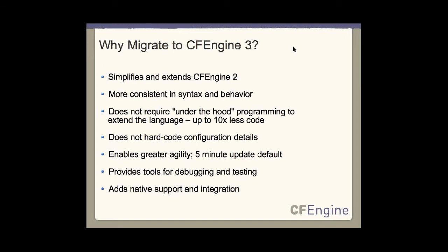So let's explore the obvious question: why upgrade? There are a number of reasons to move to CFEngine 3. CFEngine 3 will simplify and extend CFEngine 2 with improved functionality. It's a complete rewrite, designed from the ground up to be more consistent in syntax and behavior than preceding versions. In the previous version, under-the-hood programming was sometimes required to extend the language for ordinary tasks such as creating lists, pattern matching, and iteration. Version 3 puts this functionality directly into the language.